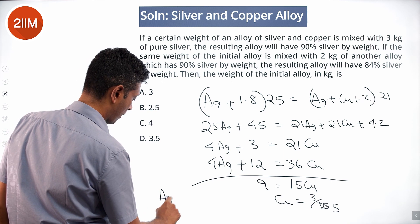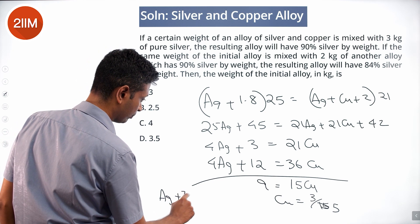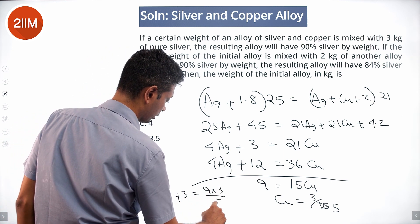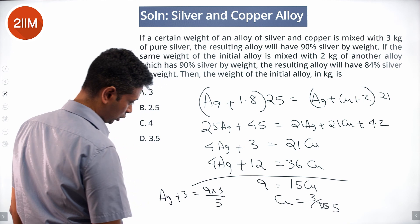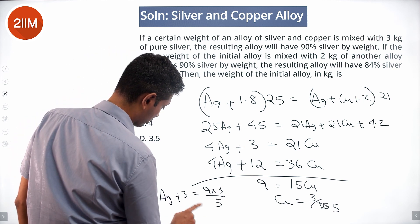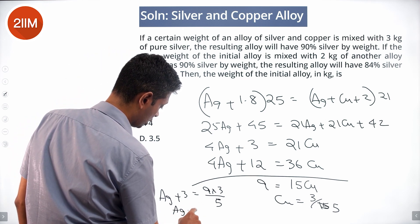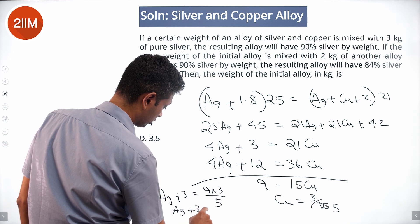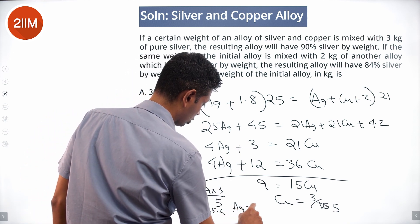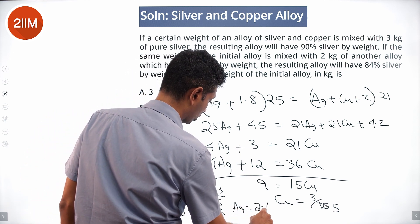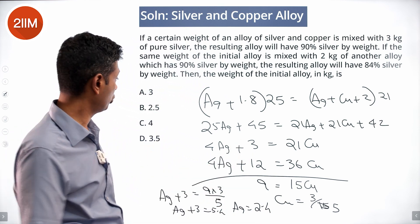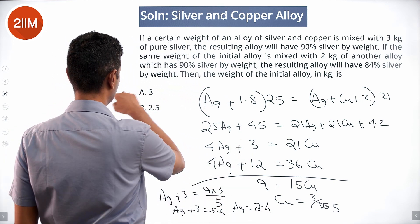Plugging Cu equals 3 by 5 into Ag plus 3 equals 9 Cu: Ag plus 3 equals 9 times 3 by 5 equals 27 by 5 equals 5.4. So Ag equals 2.4, and Cu equals 0.6. Check: 2.4 plus 0.6 equals 3 — the total weight of the initial alloy.